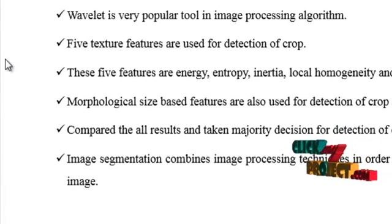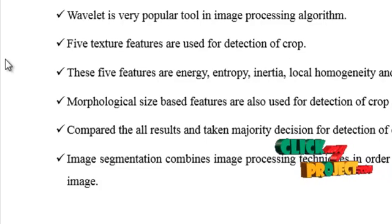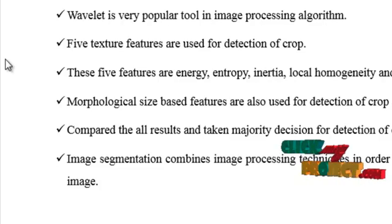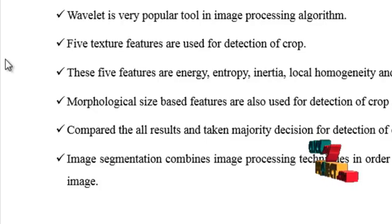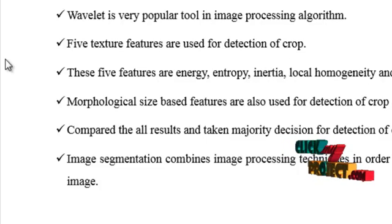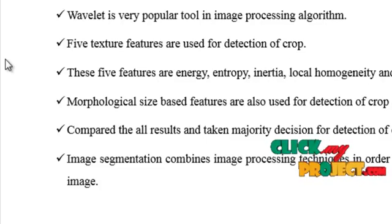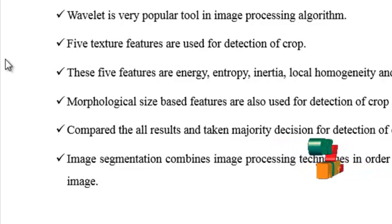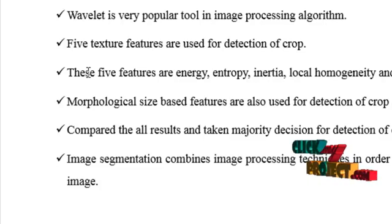In this proposed work, we developed an image processing algorithm for crop detection and management of weed. Wavelet is a very popular tool in image processing. Five texture features are used for crop detection: energy, entropy, inertia, local homogeneity, and contrast. Morphological size-based features are also used to detect crop and weed. All results are compared and a majority decision is taken. Image segmentation is used to extract cells from the image. The overall process is done by simulation in MATLAB.